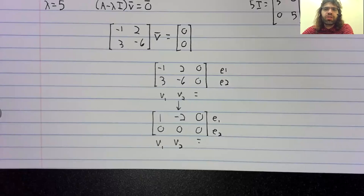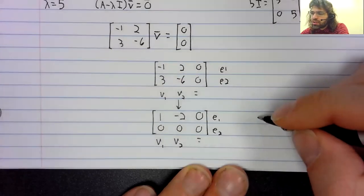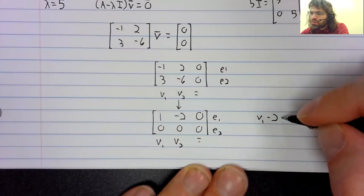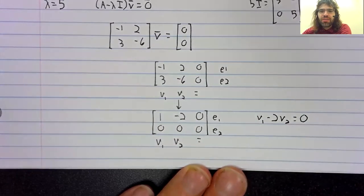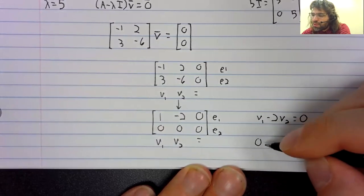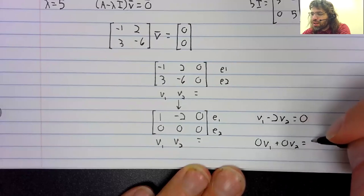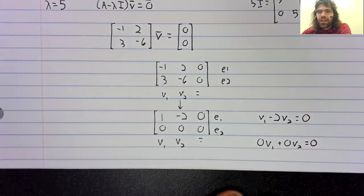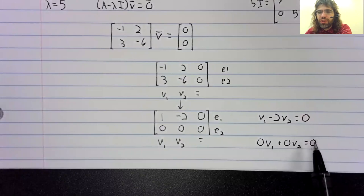But something a little different happens than happened in the set of notes where I taught you how to solve matrix equations. The equations we get: v one minus two v two equals zero. The second equation, zero v one plus zero v two equals zero. That's giving us no useful information at all. It's telling us that zero plus zero equals zero. So all we have is this.